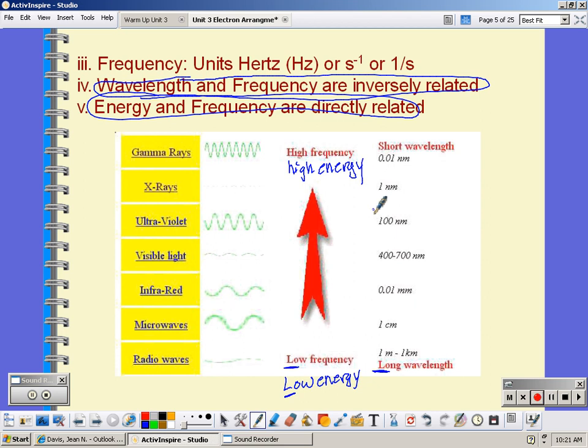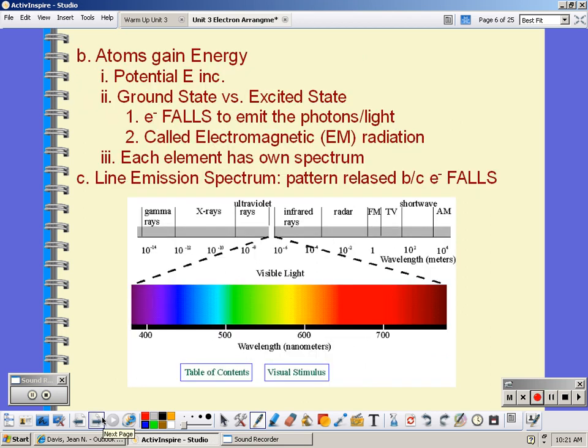Okay, so atoms can gain energy, and we can gain energy by electricity or by fire heating it up. The potential energy then increases. Our electrons are able to jump up to a higher energy level. When the electron falls, it emits that photon of light. And we can take that light and go to our electromagnetic radiation spectrum and figure out the color. Each element gives off its own spectrum, its own set of colors. The line emission spectrum is what you call that pattern of colors that are released by the atom as the electron gets excited and then falls back down to the ground state.